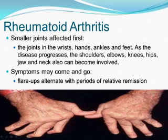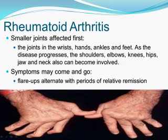Rheumatoid arthritis is an autoimmune disease that causes chronic inflammation of the joints. Rheumatoid arthritis can also cause inflammation of the tissue around the joints as well as in other organs in the body. Autoimmune diseases are illnesses that occur when the body's tissues are mistakenly attacked by their own immune system. Patients with autoimmune disease have antibodies in their blood that target their own body tissues, where they can be associated with inflammation.